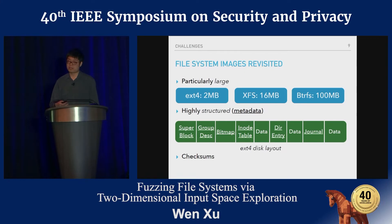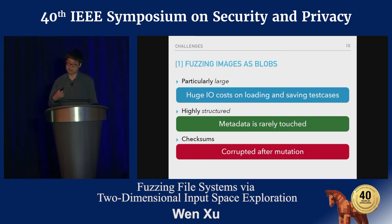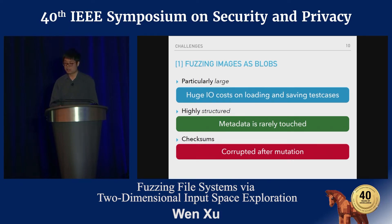Finally, many file systems introduce checksums for integrity checks. So if we naively mutate bytes on the image, we will violate the checksum checks. If we directly apply AFL to fuzz file system images, we suffer from huge I/O cost due to the large size. We will also rarely touch the metadata, but keep mutating plain user data — which is not what we want — and all checksums may be corrupted after any mutation.